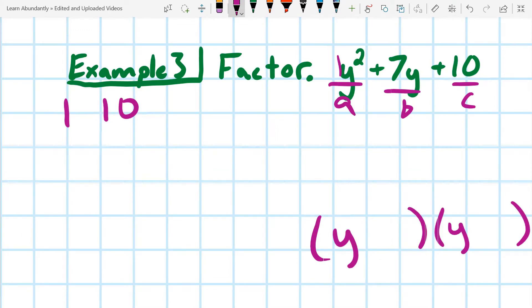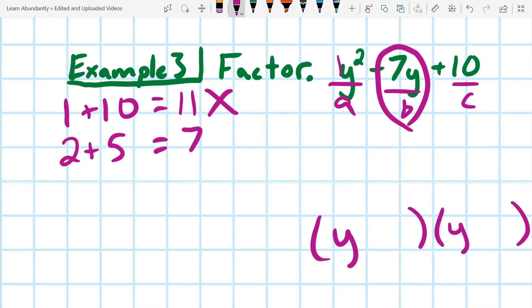But this time, if I look at 1 times 10 is 10, but 1 plus 10 equals 11. And so that's not what we want. What we're looking for is 7. So what about 2? 2 plus 5 is 7. And 2 times 5 is 10. So we have our factor pairs. 2 times 5 is 10, and 2 plus 5 is 7.